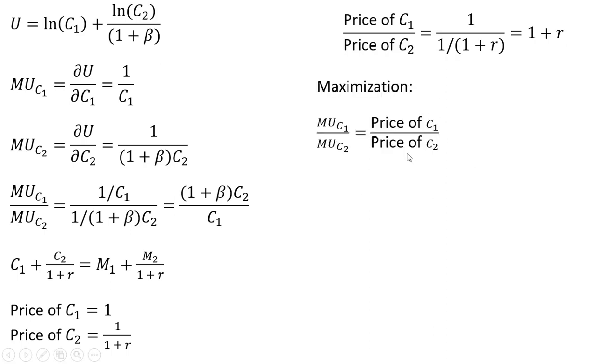So utility maximization, we're just going to set the marginal rate of substitution equal to the ratio of the prices. So making our substitution here, here is the marginal rate of substitution, the thing we got here on the left-hand side, and that's just going to equal the ratio of the prices, 1 plus R. And now we can just simplify this. Let's solve it for C subscript 2, and you get this result.